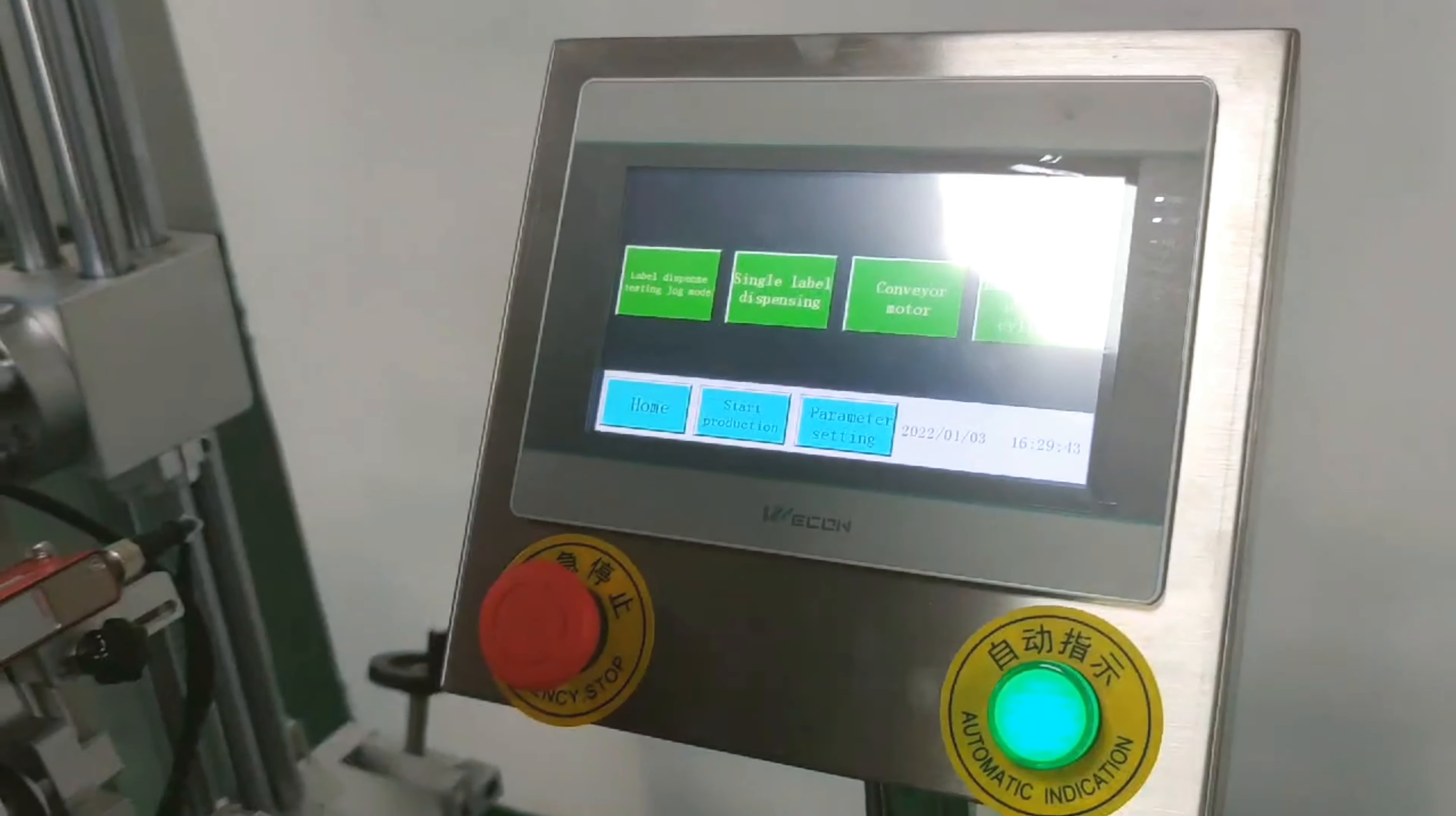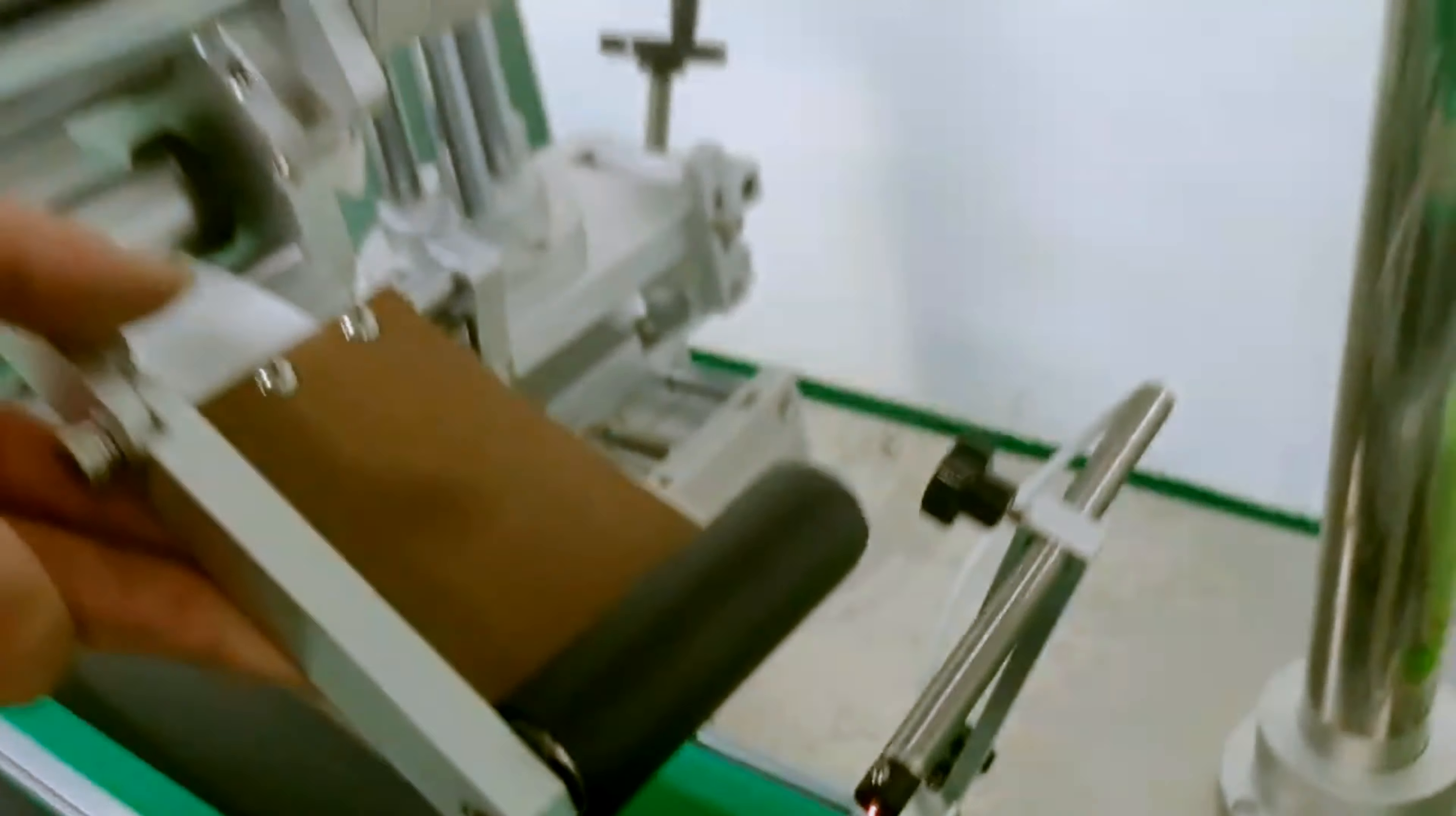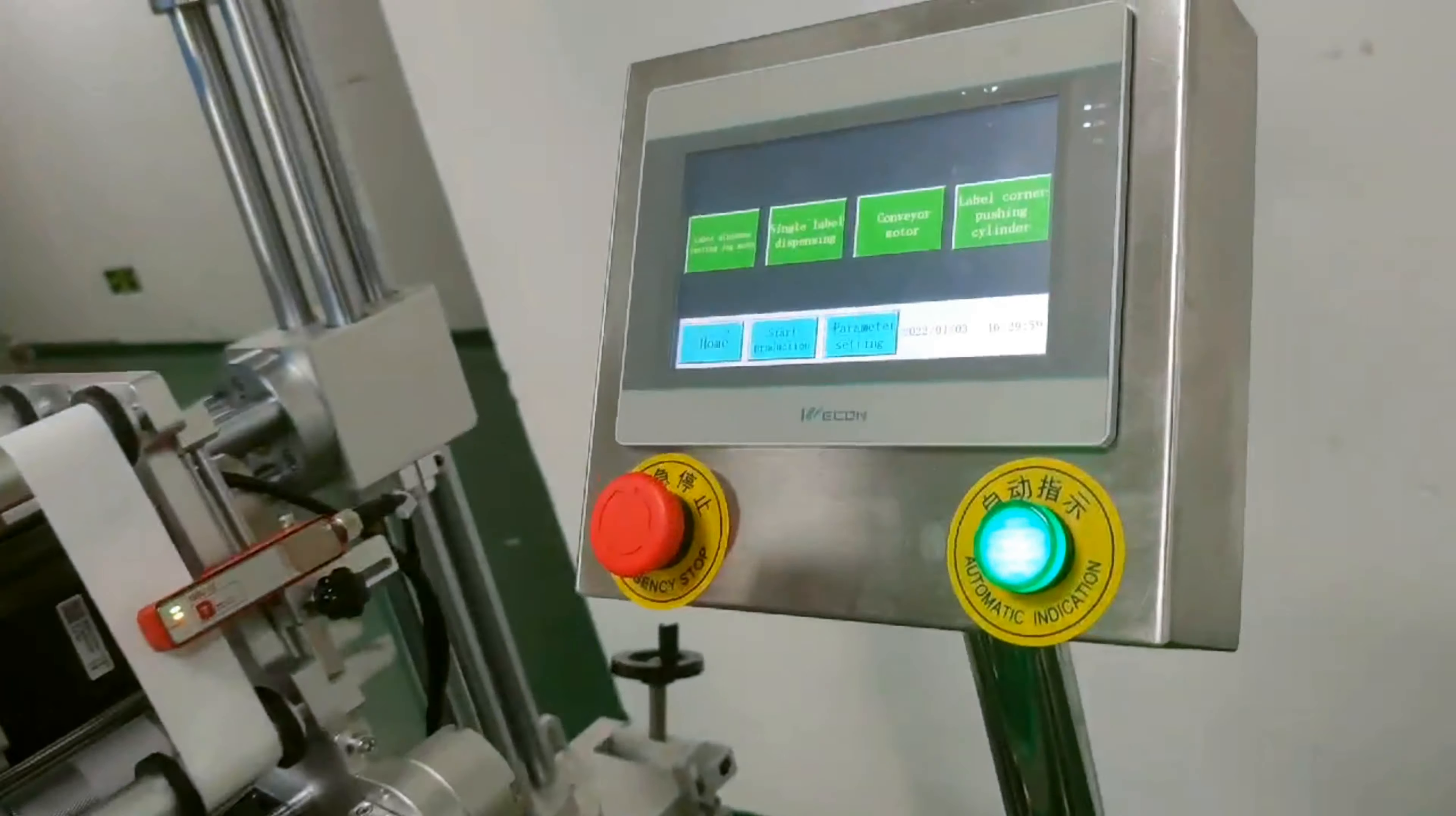Click Single Label Dispensing. Now you can see here is shorter than previous, and move it a little up, and click Single Label Dispensing.